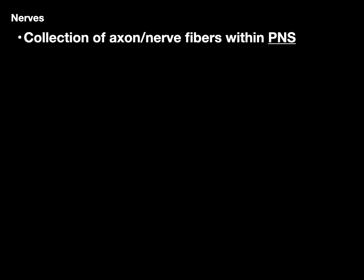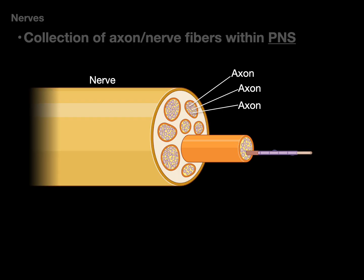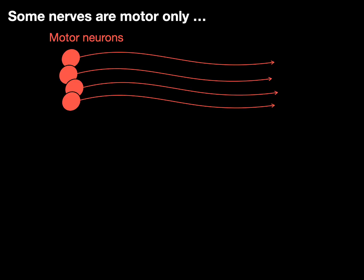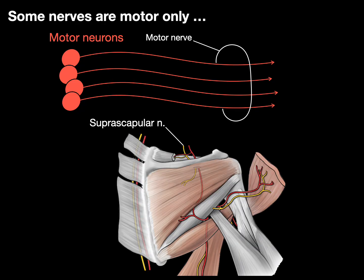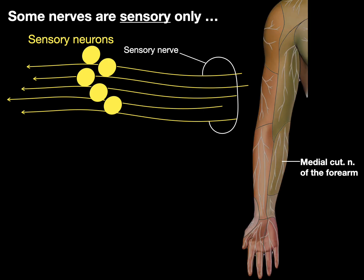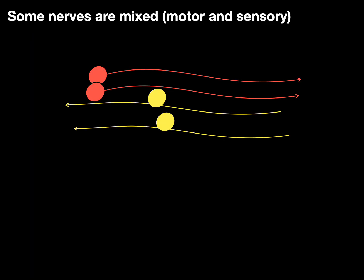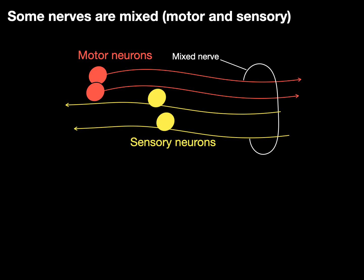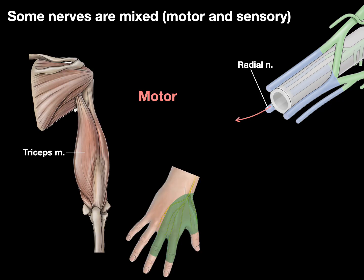A nerve is a collection of axons or nerve fibers within the peripheral nervous system. In a nerve, those axons come in two flavors: sensory for input and motor for output. Some nerves are motor only — like the suprascapular nerve, which only has motor neurons innervating the supraspinatus and infraspinatus muscles. Some nerves are sensory only — like the medial cutaneous nerve of the forearm. And some nerves are mixed, meaning they have both motor and sensory neurons — for example, the radial nerve, which innervates the triceps and brings sensation from the back of the hand.